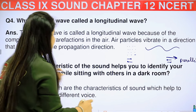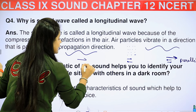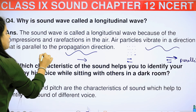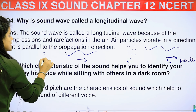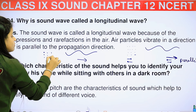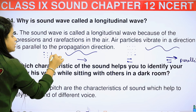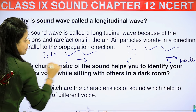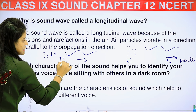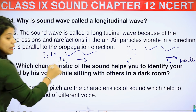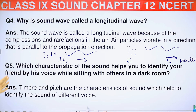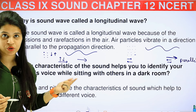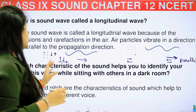So when the wave direction and particle movement are parallel, it is called a longitudinal wave. If we talk about a transverse wave, the particles move up and down while the wave moves forward — they are perpendicular. So that is what makes sound a longitudinal wave. That was the fourth question.